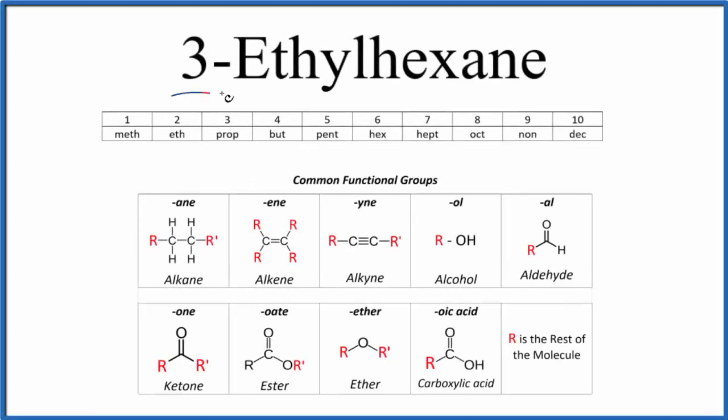Let's write the structural formula for 3-ethylhexane. The molecular formula, that's C8H18. The structural formula, we want to draw it out and be able to visualize how those atoms are connected.